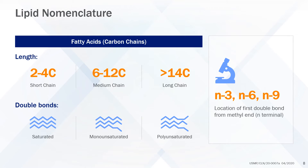Fatty acids can also be classified by the number of double bonds into saturated, containing no double bonds; monounsaturated, containing one double bond; or polyunsaturated fatty acids, containing two or more double bonds.